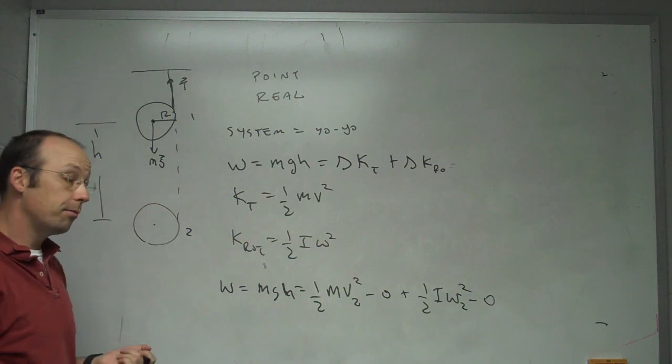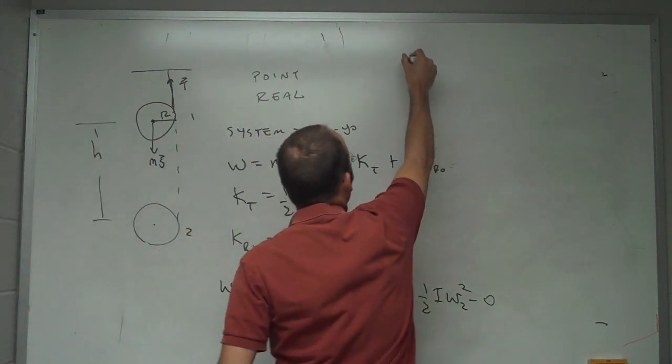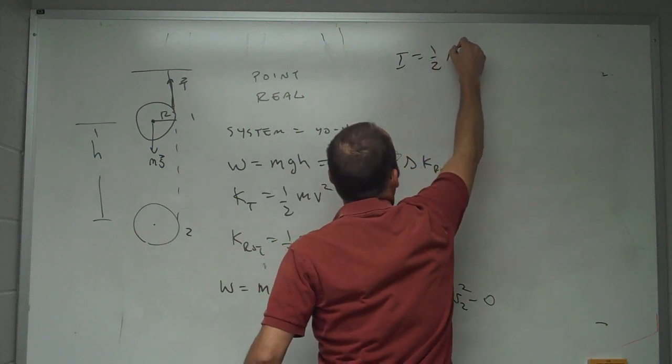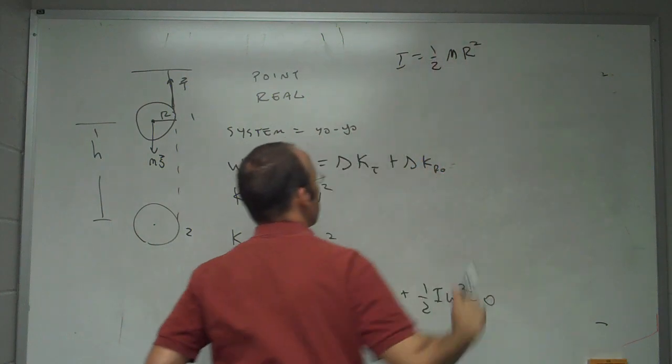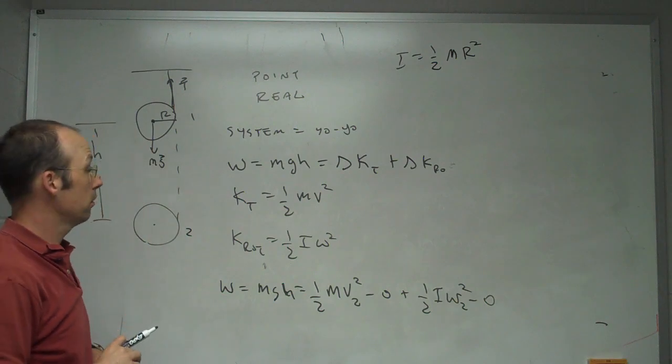Okay, now I know some things about disks. First, I know that for a disk, I equals one-half m r squared, where m is the mass of the disk and r is the radius of the disk.